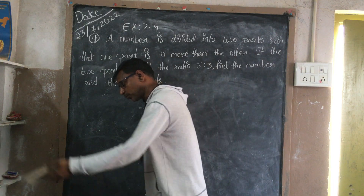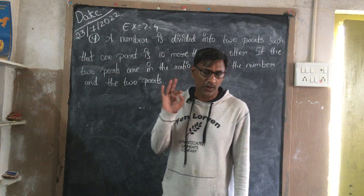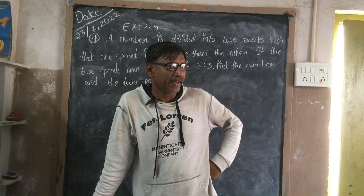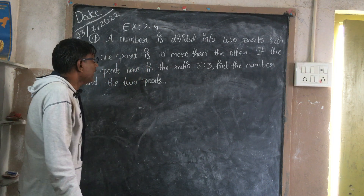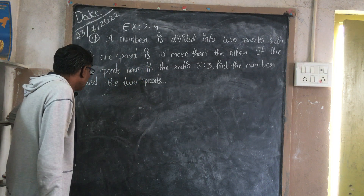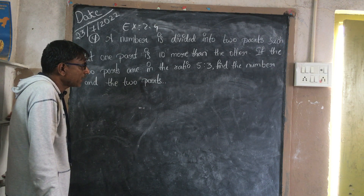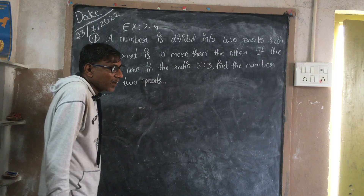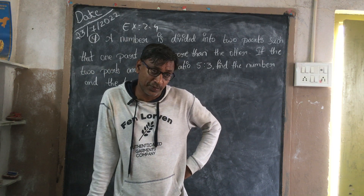This is problem number 2.4, the fourth problem from linear equations. We will try one problem. A number is divided into two parts such that one part is 10 more than another. I don't know the number, but it is divided into two parts.